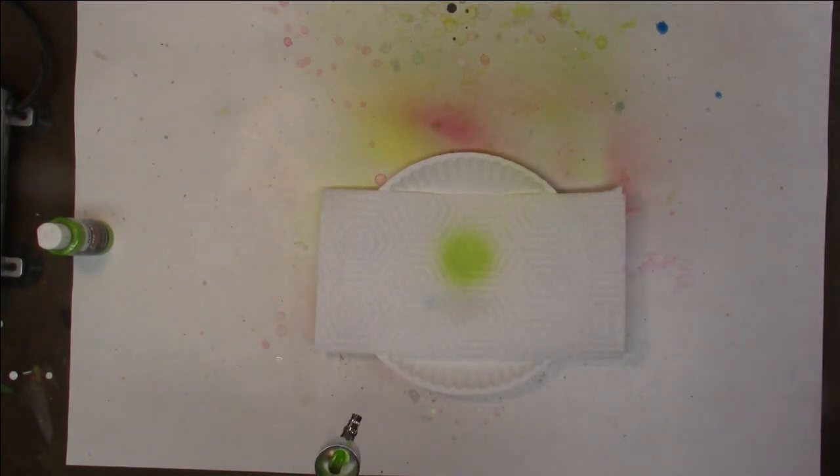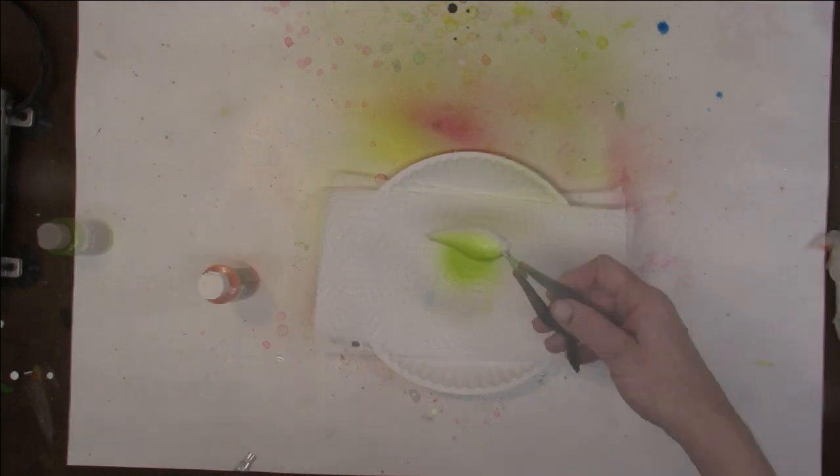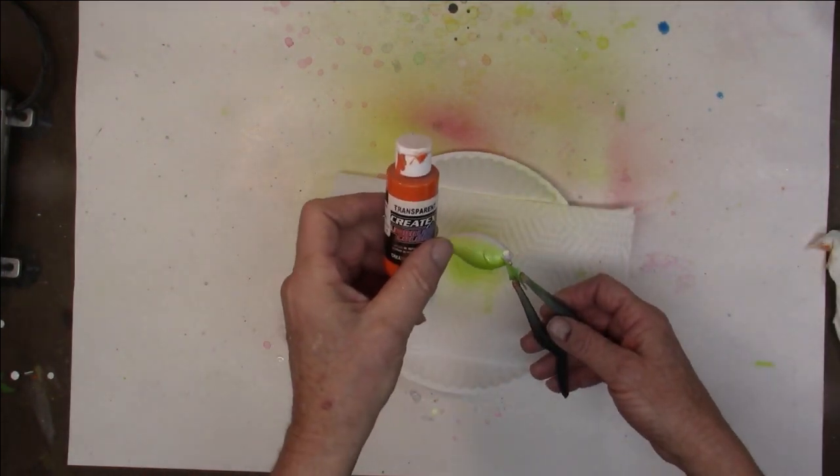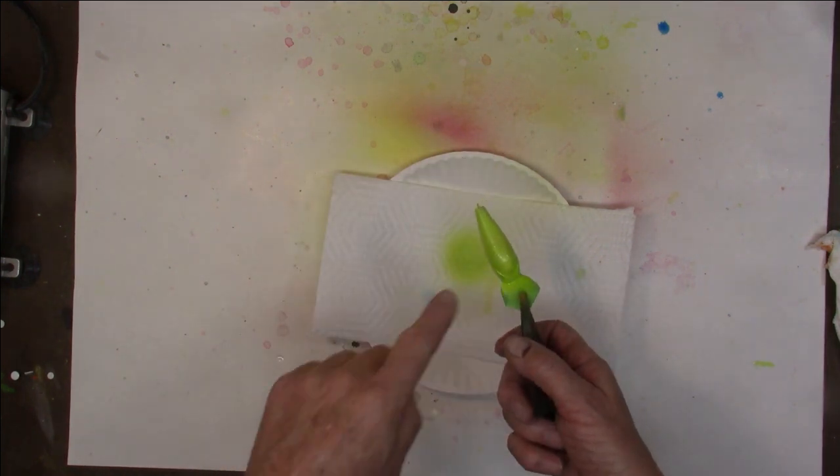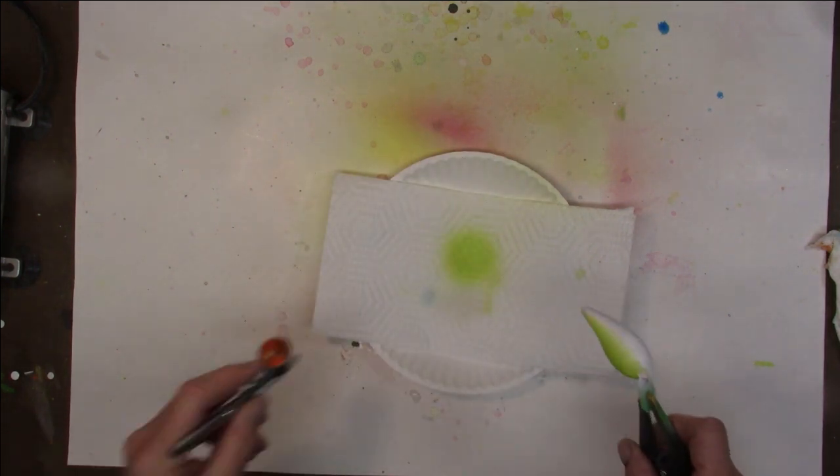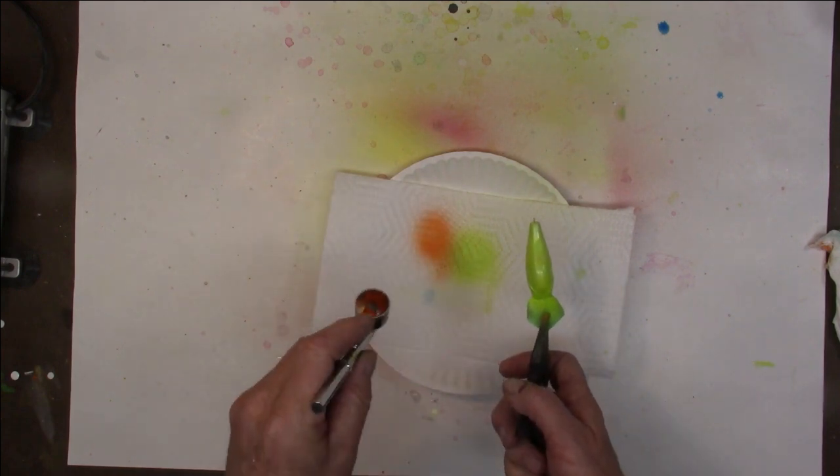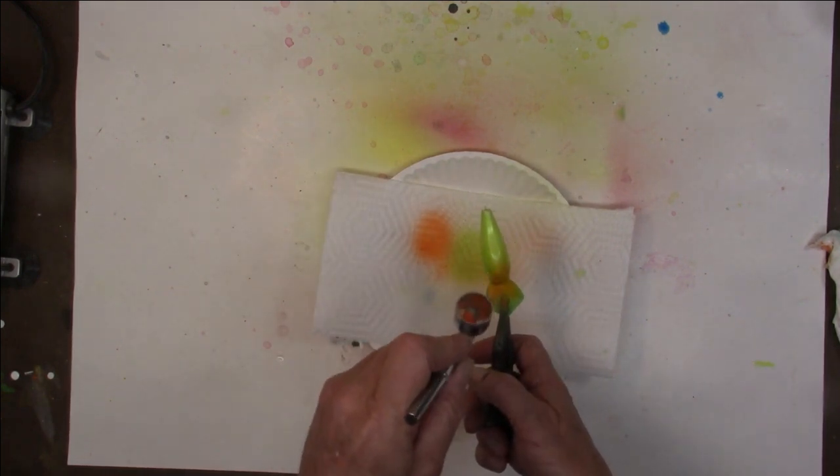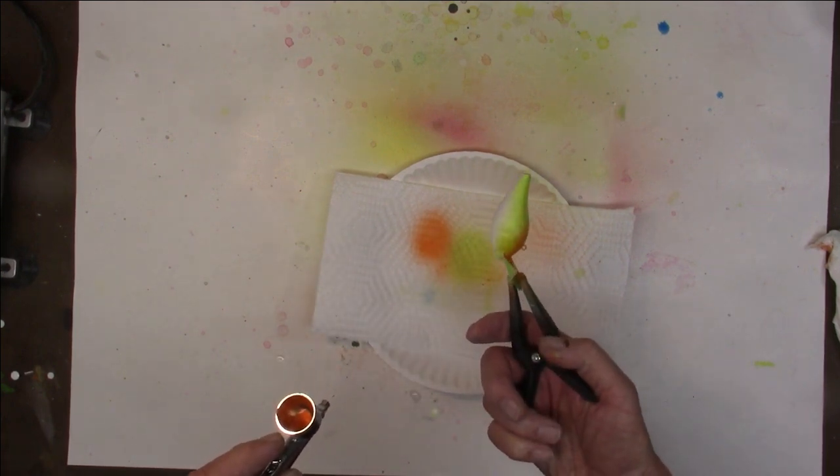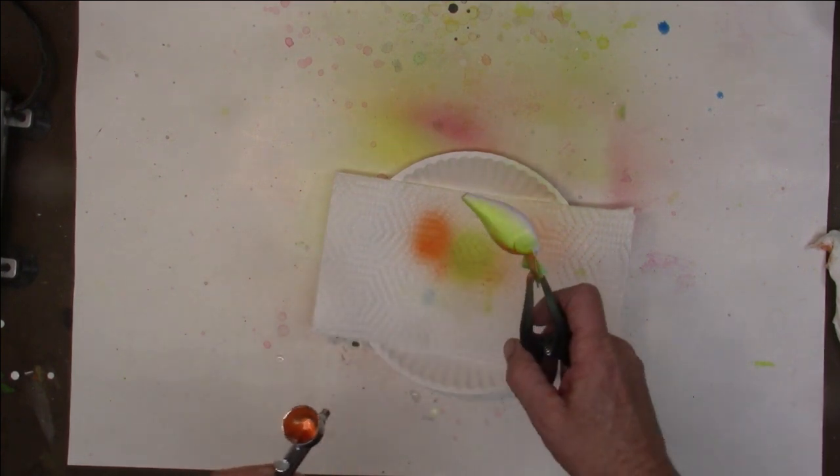Let me clean this up, get a different color in. Next thing we're gonna do, I got a little Createx transparent orange. We're gonna shoot a little orange right up here on the front of the belly, more on the bill, so it just blends back a little. Just a little bit on that front, that's all we need.